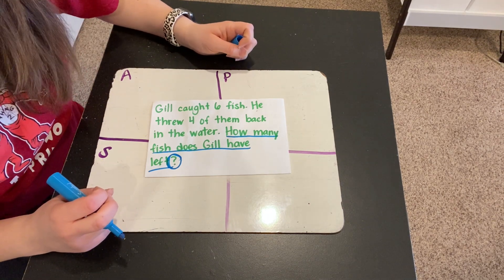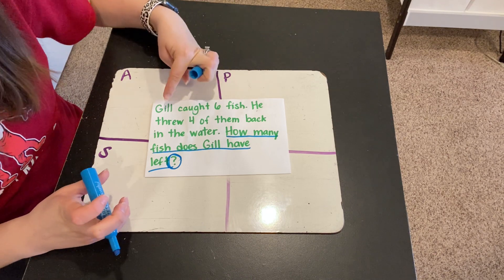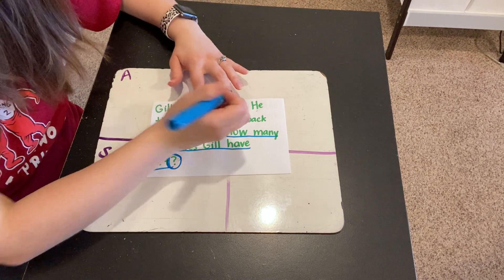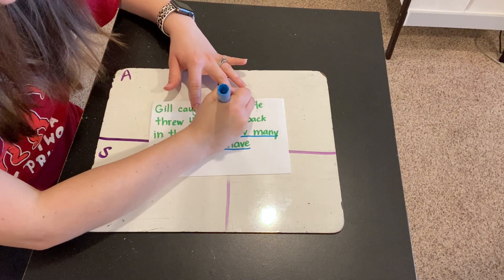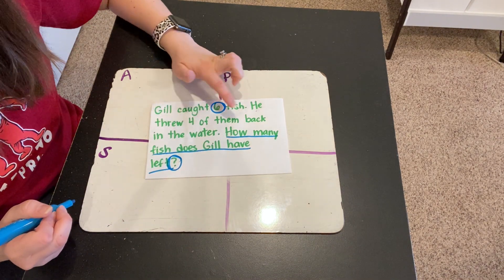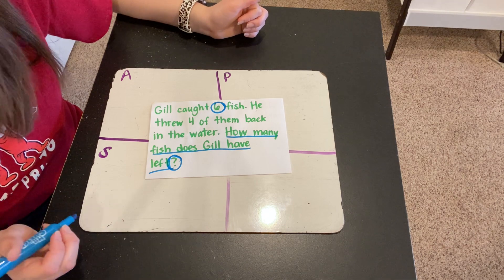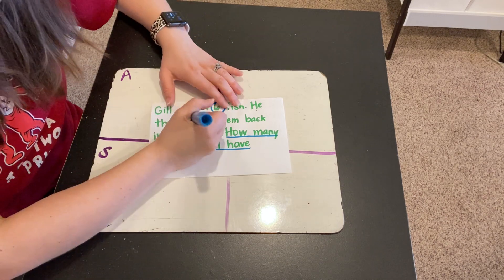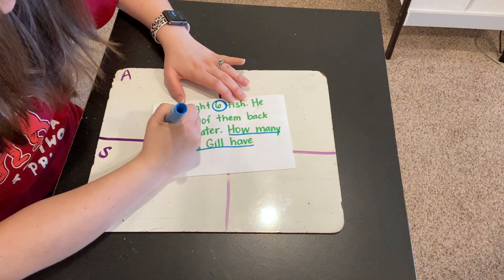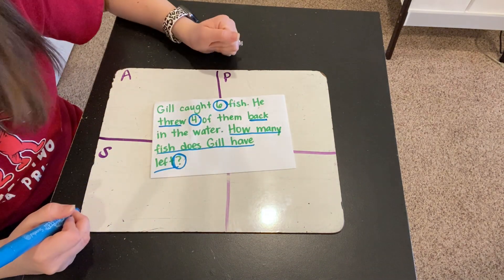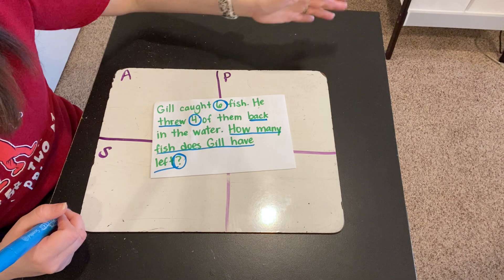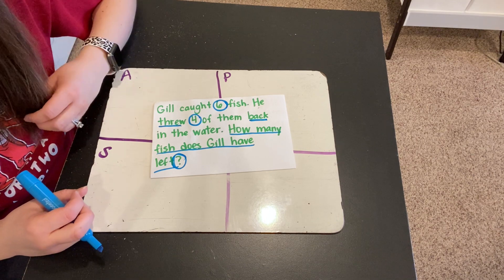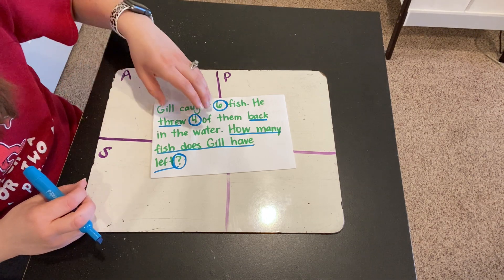Now let's read back through and listen for anything that's going to be important about fish. Gil caught six fish. What's important in that sentence? Six — it tells us how many fish he started with. He threw four of them back in the water. What's important in that sentence? The number four is important. And also, threw back. Think about what's happening if he's throwing fish back. He has all of these six fish and he throws some back. Is that adding or subtracting? Think about that as we move on to our plan.